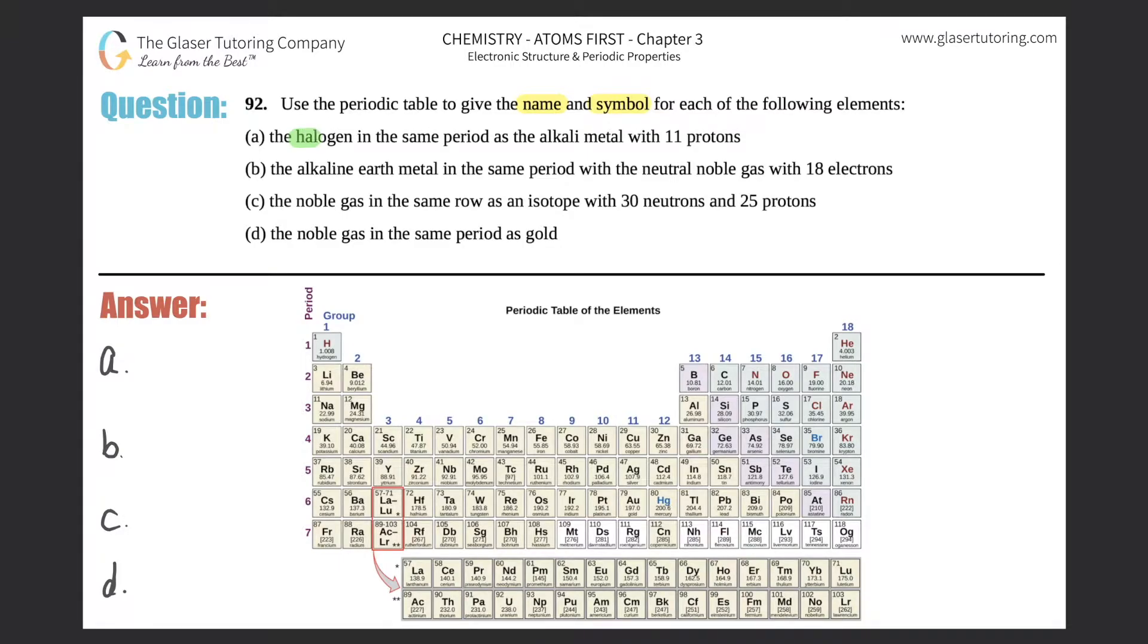Alright, let's get to work. Part a asks: What is the halogen in the same period as the alkali metal with 11 protons? First things first, we're talking about periods here. Periods on the periodic table always run from left to right. Remember, groups are the ones that go up and down. For example, this whole row would be classified as period number four.